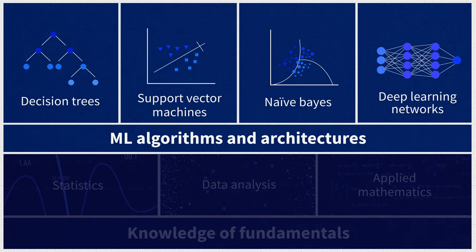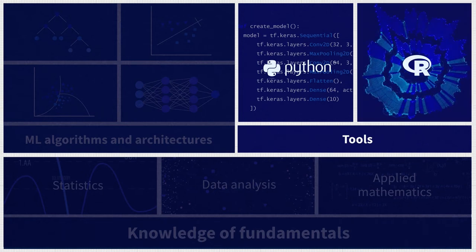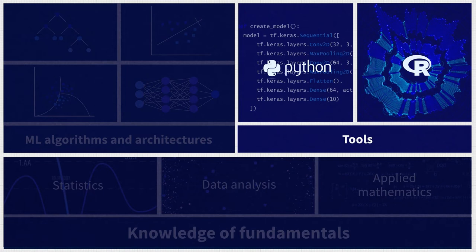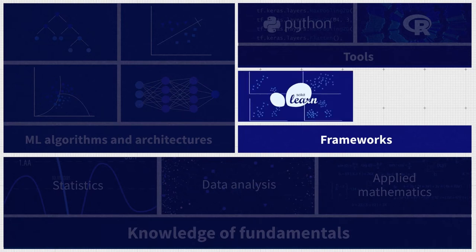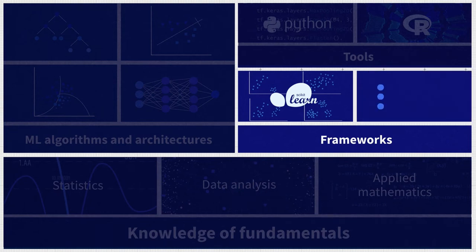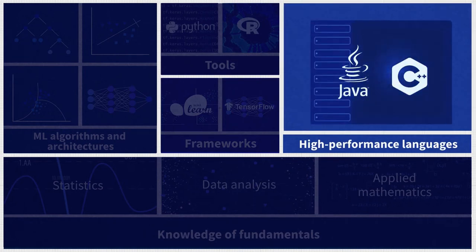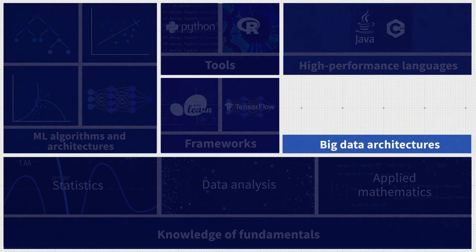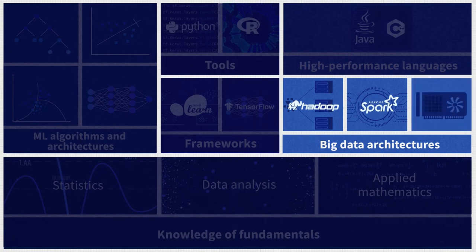To train those models, engineers must be familiar with common tools. Python is the main programming language used in data science. ML engineers may also be proficient in R to explore and visualize data. Key frameworks include Scikit-learn, a Python-based library featuring a variety of ML algorithms, and TensorFlow for deep learning. For production engineering, ML engineers are often required to know high-performance languages like Java and C++. If they work with big data architectures, they must know distributed computing frameworks like Hadoop and data processing tools like Apache Spark. If the product uses deep learning, the engineer may need to configure parallel GPU computing platforms such as NVIDIA CUDA.